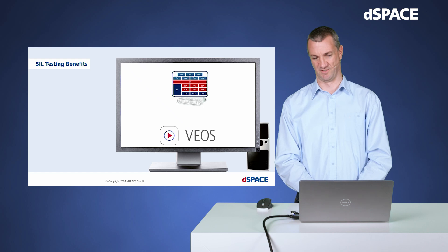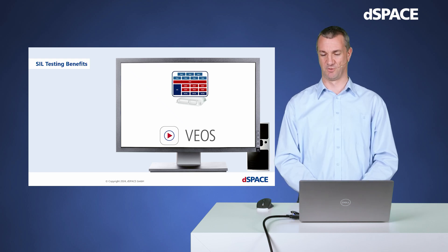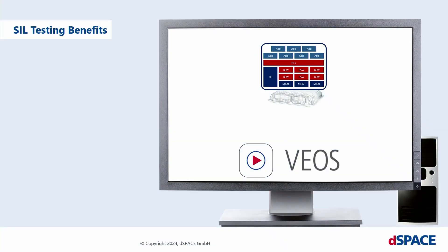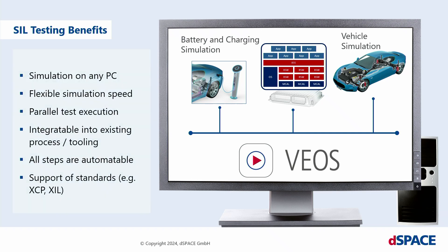For simulating, we need a simulator. Our software-in-the-loop simulator is called VEOS. In addition to the virtual ECUs, we introduce a vehicle simulation, a battery or charging simulation, and connect all the different parts together. We then have a software-in-the-loop system simulation that can be run on a PC — as we've seen, faster than real time, and we'll later see slower than real time. We can also run tests in parallel. All of these things are possible with software-in-the-loop testing.